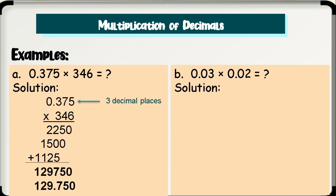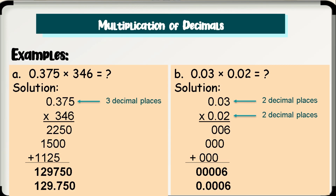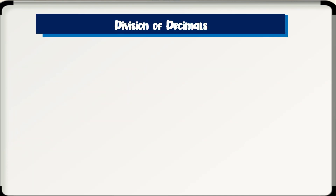Letter B: 0.03 times 0.02. To solve, multiply them as whole numbers — we have 6. Count the decimal places in both factors: 0.03 has 2 decimal places and 0.02 has also 2 decimal places. Moving the decimal point 4 units to the left, we have 0.0006 as our final answer.